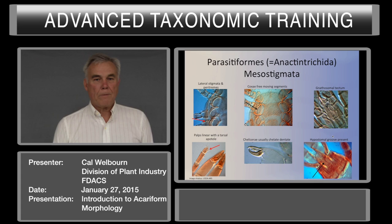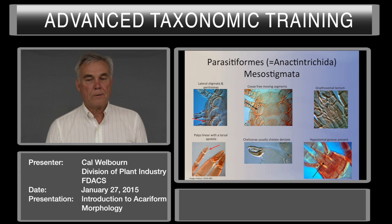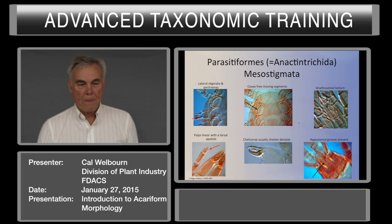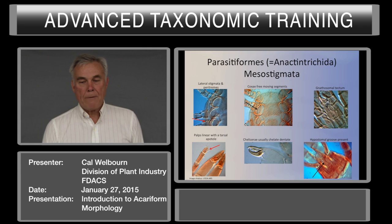To review the characters for separating the Parasitiformes or Mesostigmata from the Acariformes: the Mesostigmata have lateral stigmata and paratremes. The coxa is a free-moving segment. The gnathosoma has a tectum, a structure on top of the gnathosoma. The palps are linear with a claw-like structure, an apotele, on the tarsus. Chelicerae are usually chelate-dentate, especially for those associated with plants. Most Mesostigmata have a hypostomal groove on the underside of the gnathosoma that may have little tooth-like structures in it.